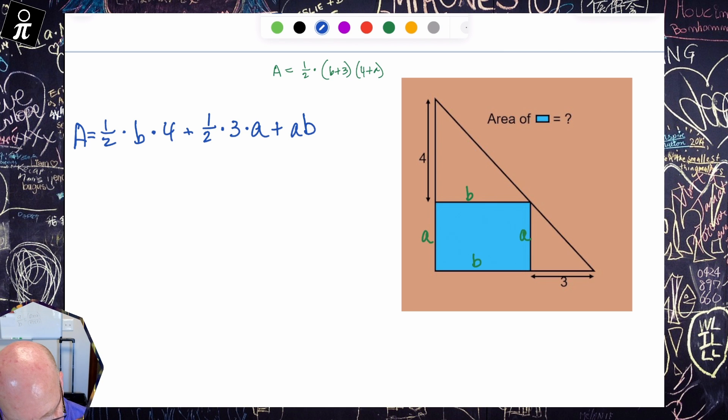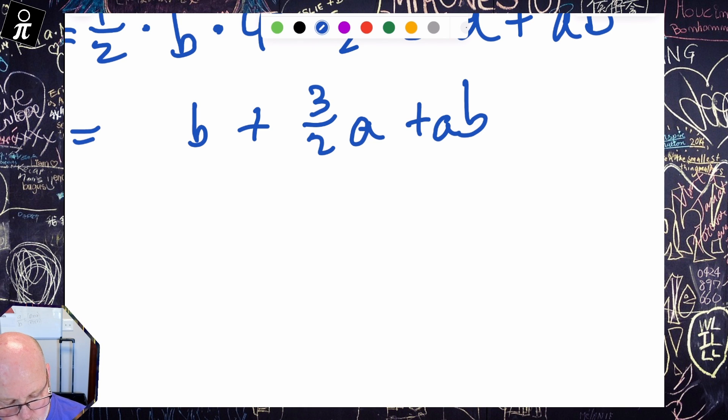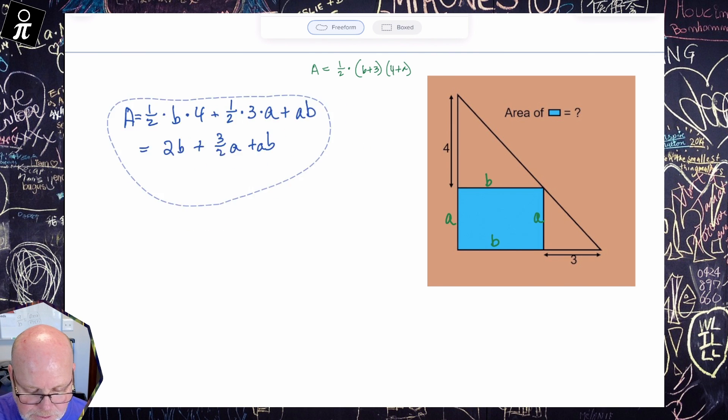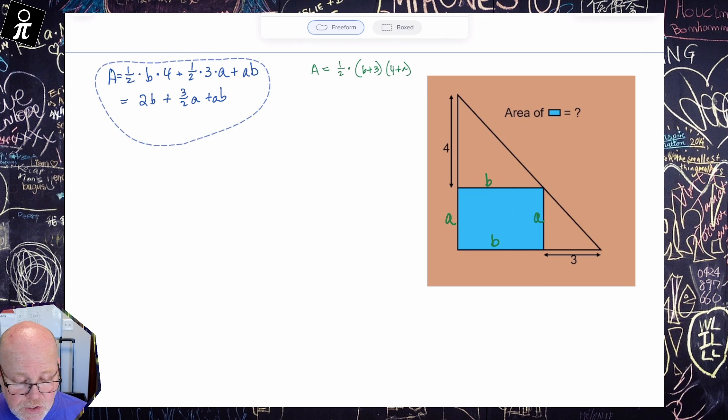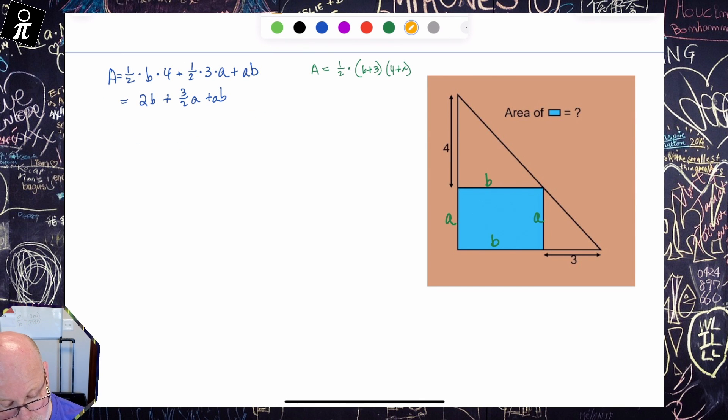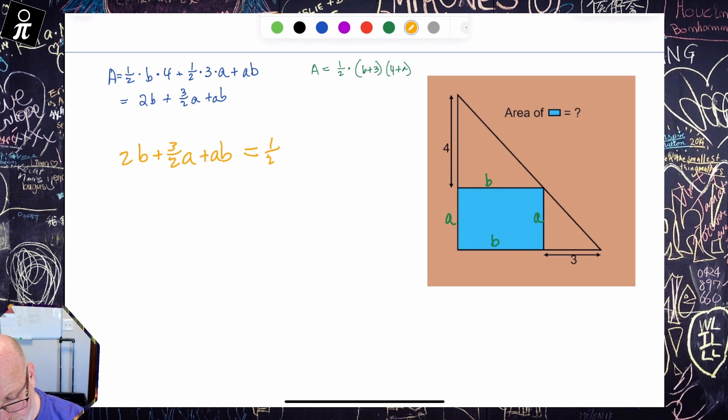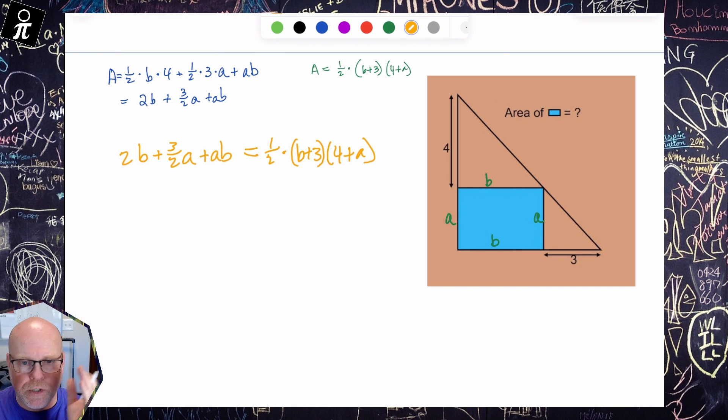And let's simplify this a little bit. So that's going to be two B plus three halves A plus AB. So there we go. All right, so we have two different ways to find the area of that triangle. And they should both be equal to each other, shouldn't they? So I'm going to write an equation so that they are equal to each other. So I'm going to say two B plus three halves A plus AB, that's this guy, is supposed to equal this guy, which is one half times B plus three times four plus A. Yeah, one half base times height. All right. So now these two equations are supposed to equal each other.